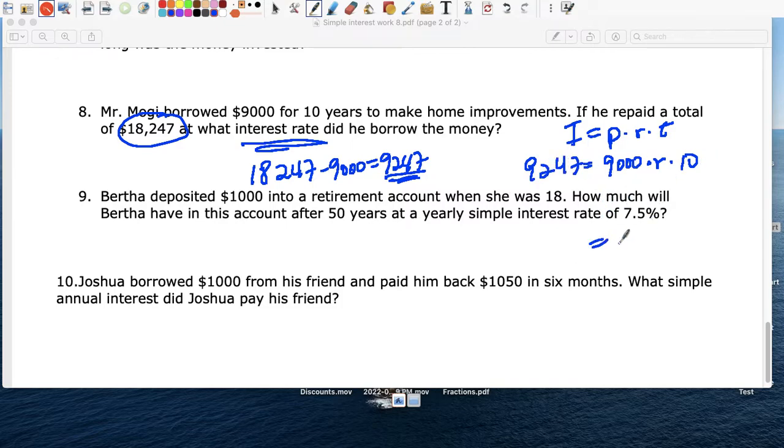9,000 times 10 is 90,000R. 9,247 divide both sides by 90,000.